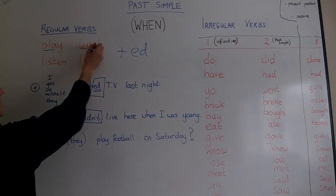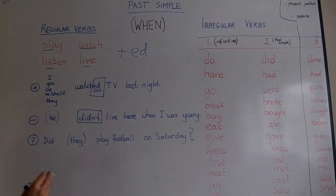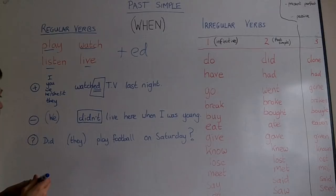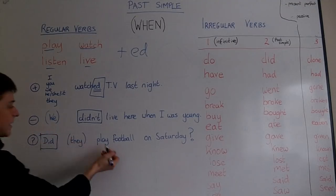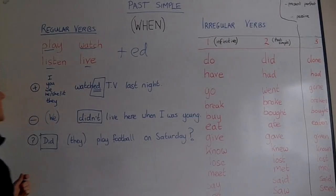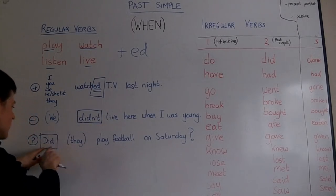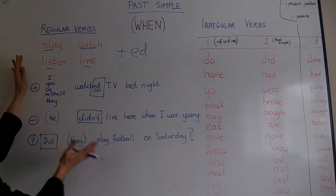These are called infinitives, which means first form — the verb in its original form. And as well as negatives, we have questions, where we use the word 'did'. Did they play football? Again, no ED on play. Did they play football on Saturday? Did they listen to music yesterday? Did they watch TV last night? Did he, did you, did we, did she? All of them just with 'did'. So past simple with regular verbs is quite easy.